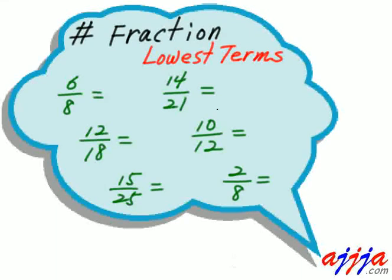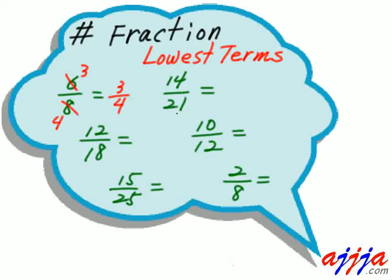Lowest terms for a fraction — that means we are talking about reduction here. Let's reduce. Most of you guys know this one already. Top and bottom, six and eight — we can use the common factor. The common factor is two, so divide by two and divide by two. So three and four — all you gotta write is three over four.